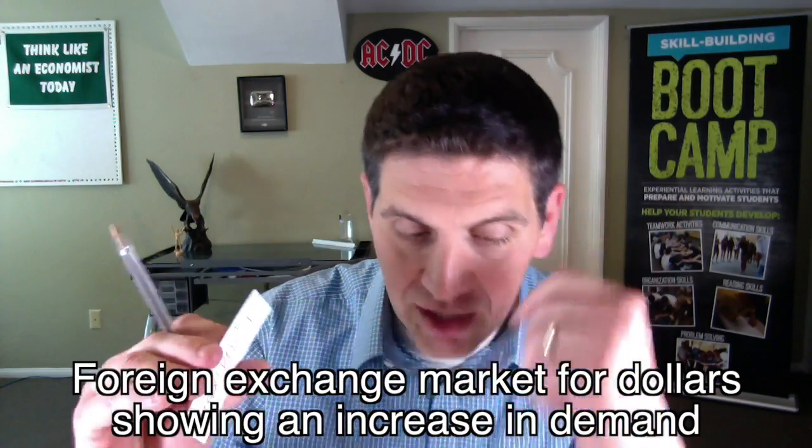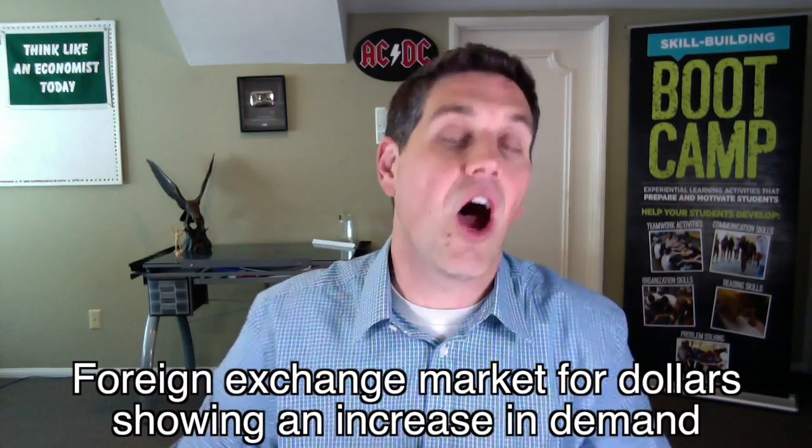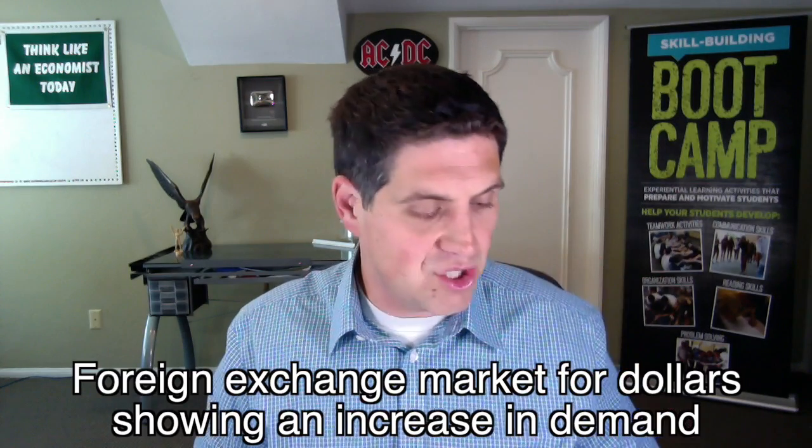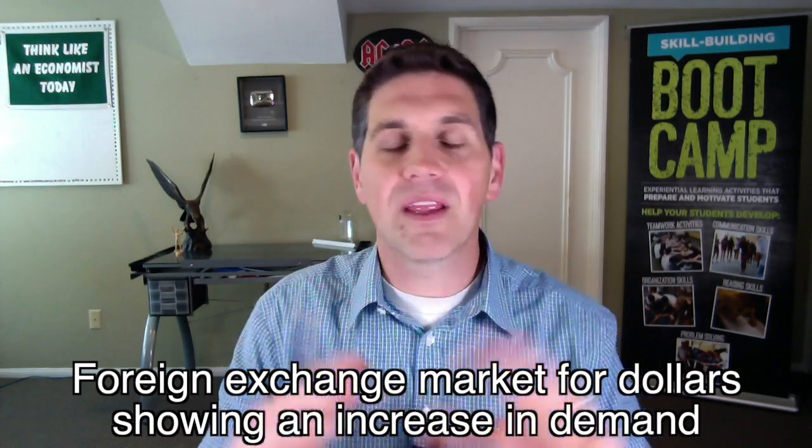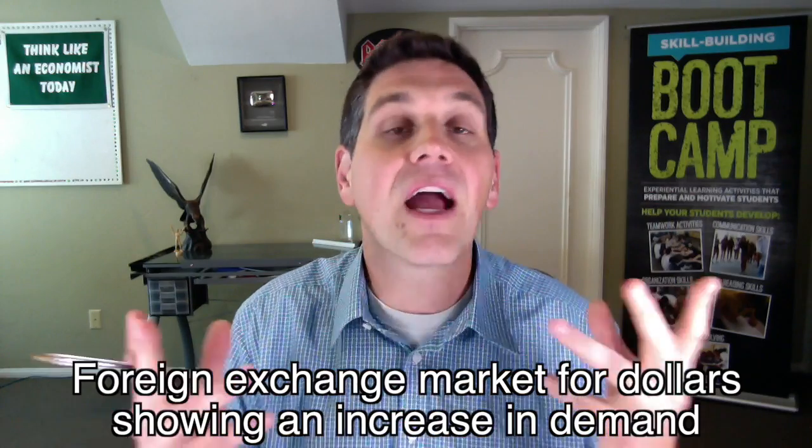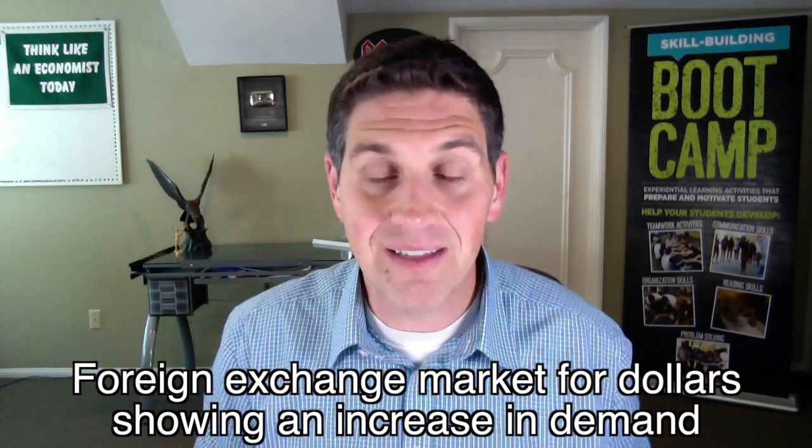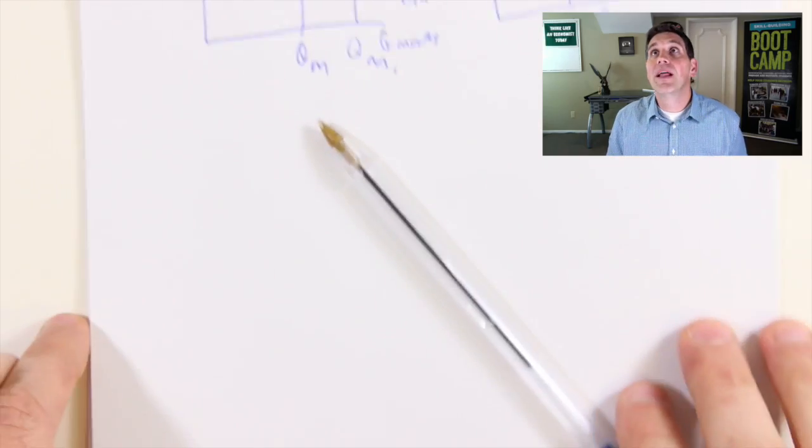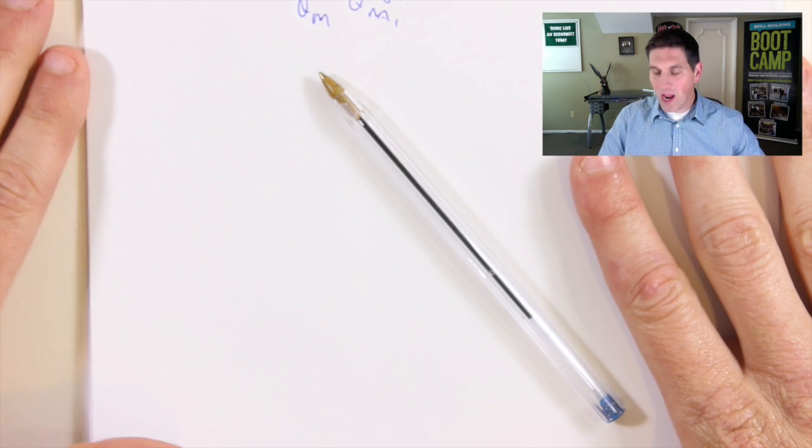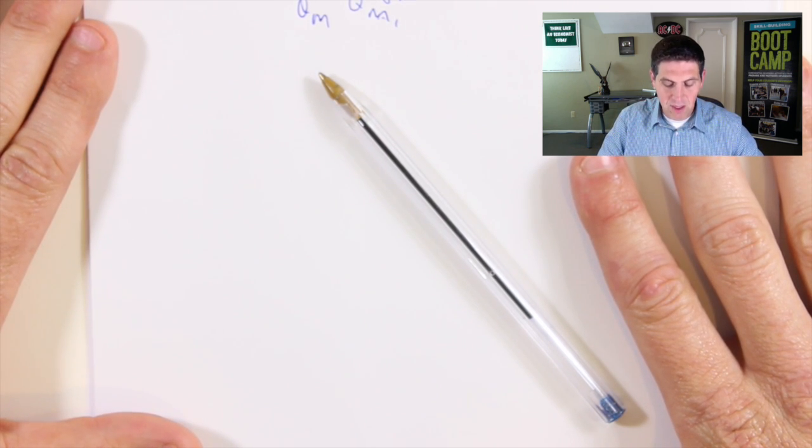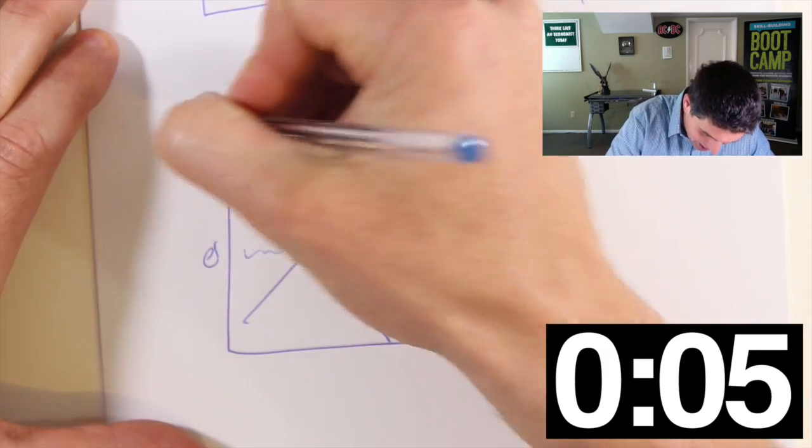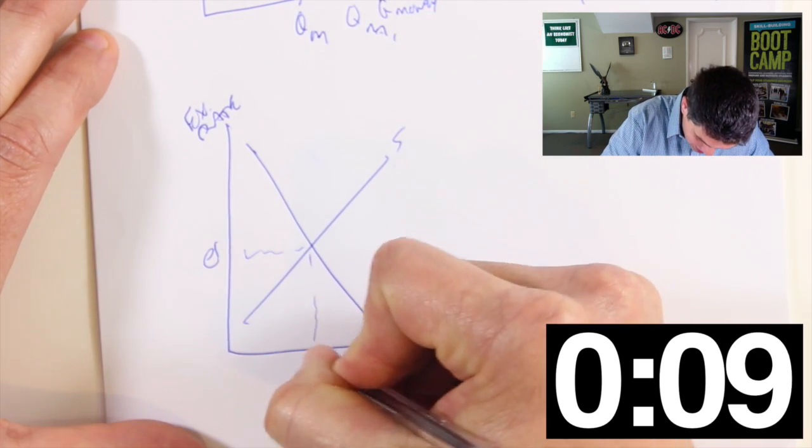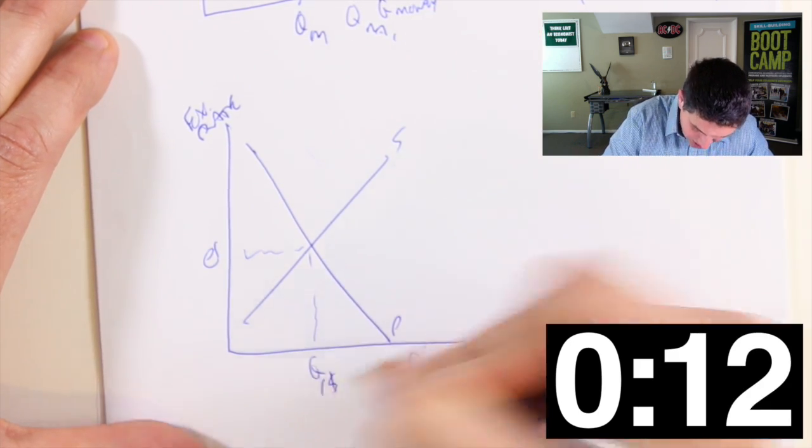Randomly picking. Foreign exchange graph showing an increase in demand for dollars. We're drawing dollars, the exchange rate for dollars, foreign exchange. Given a scenario, people in other countries prefer to vacation here in the United States so they need dollars. Draw that graph. Let's get ready. Foreign exchange market, trying to beat Mr. Clifford. On your mark, get set, go. Easy one because it's good old-fashioned demand and supply setting the exchange rate. Here's the quantity of dollars. I'll put Q1. Done.